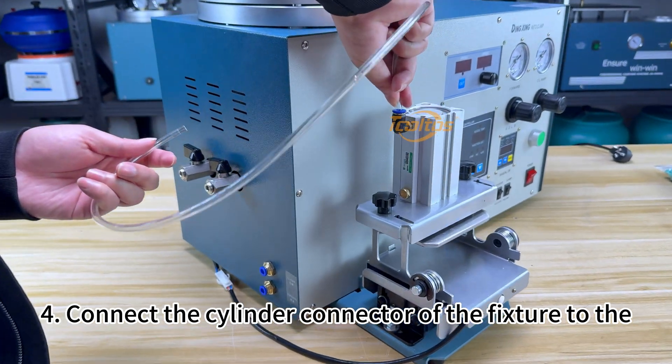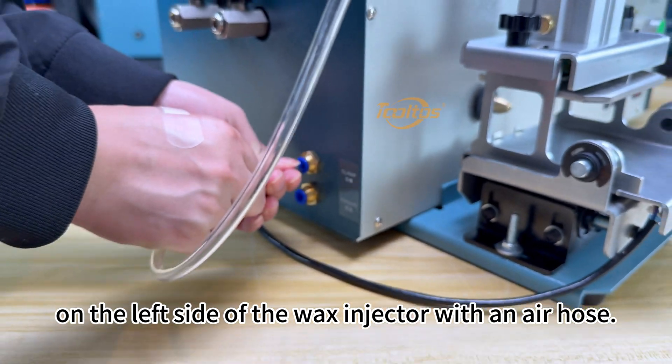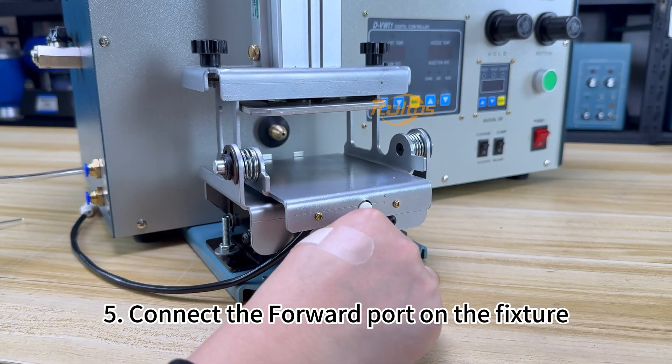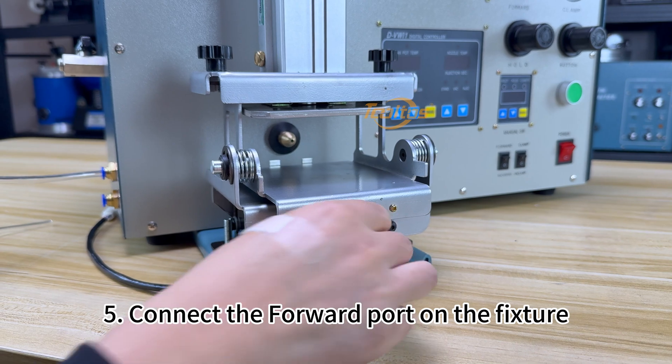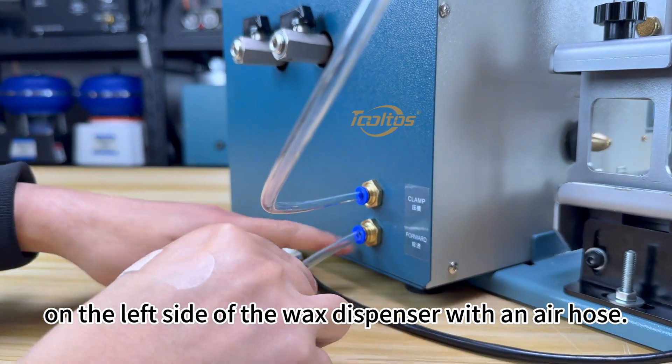4. Connect the cylinder connector of the fixture to the cylinder connector on the left side of the wax injector with an air hose. 5. Connect the forward port on the fixture and the forward port on the left side of the wax dispenser with an air hose.